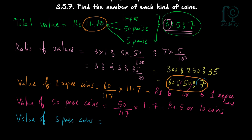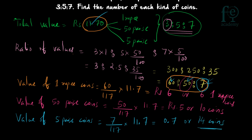Value of 5 paise coins = (7/117)×11.7 = ₹0.70, which is 70 paise. Since each 5 paise coin is worth 5 paise, there are 14 five-paise coins. So the final answer is: 6 one-rupee coins, 10 fifty-paise coins, and 14 five-paise coins.